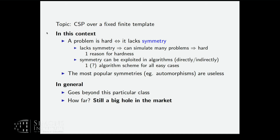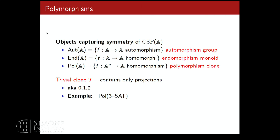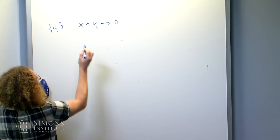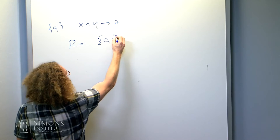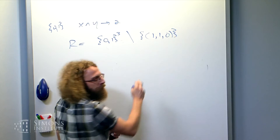Now, what is symmetry? Given a relational structure A, you can look at the automorphism group, the endomorphism monoid, or the polymorphism clone. These are operations which preserve every relation in your template. To illustrate: consider Horn-SAT and its ternary relation — all triples of Boolean values except (1,1,0). I claim the binary max operation is not a polymorphism. If you take two tuples from the relation and apply max component-wise, you get (1,1,0) — which is not in the relation. So max is not a symmetry.